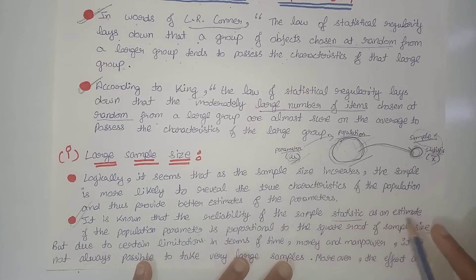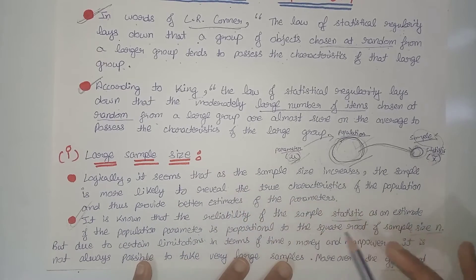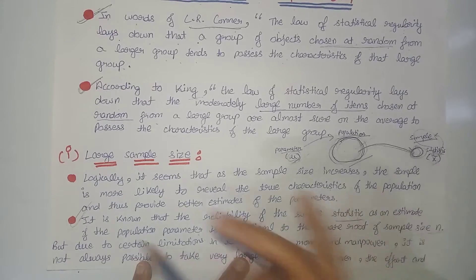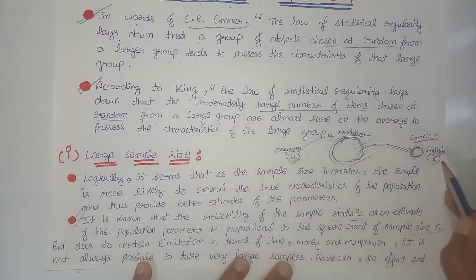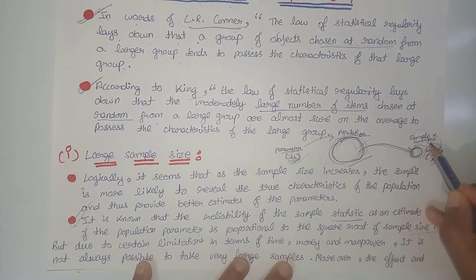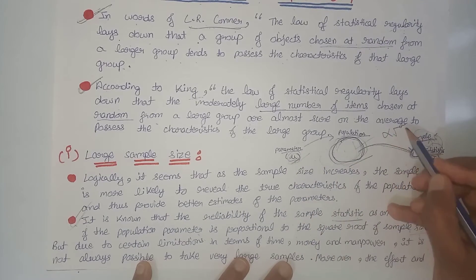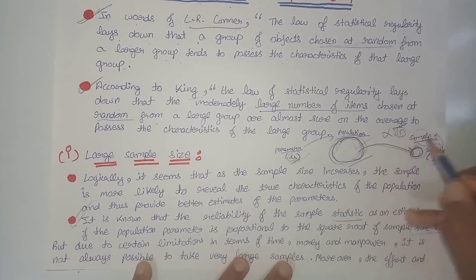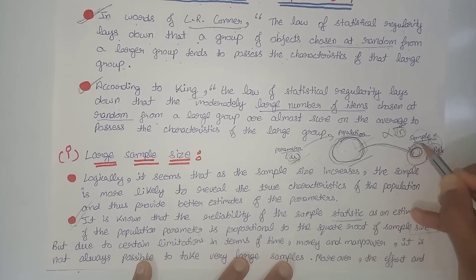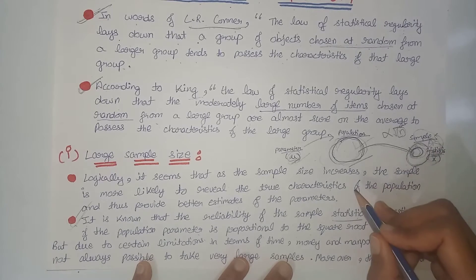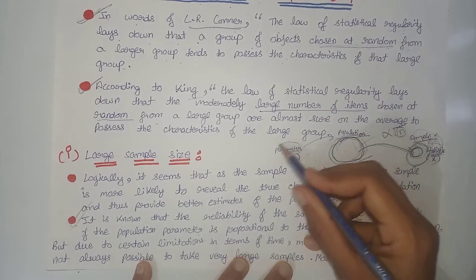The reliability of the sample statistic as an estimate of the population parameter is proportional to the square root of the sample size, that is √n. This means that as the sample size increases, our sample statistic becomes a more reliable estimate for the population parameter — the sample mean becomes a more reliable estimate for the population mean.